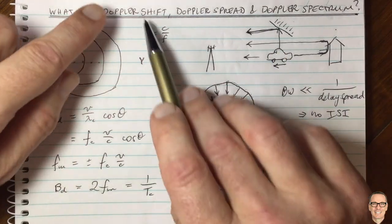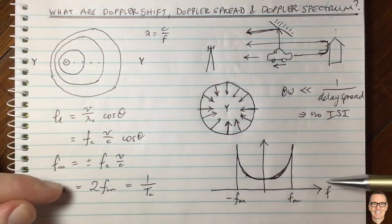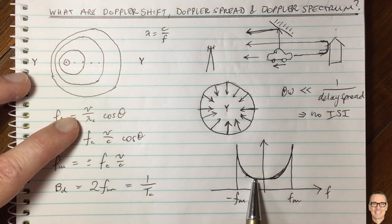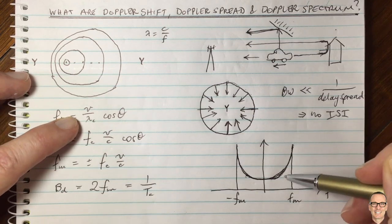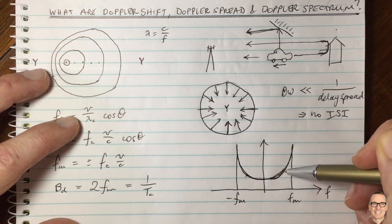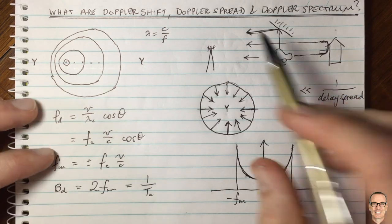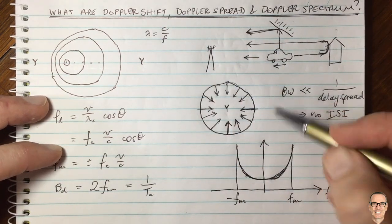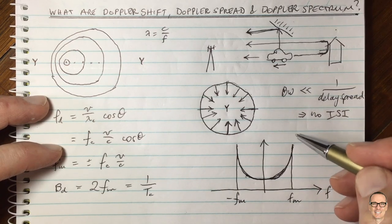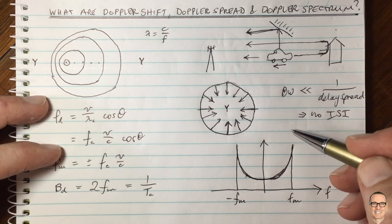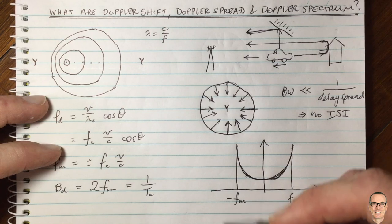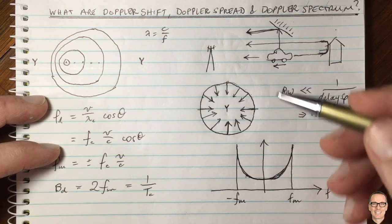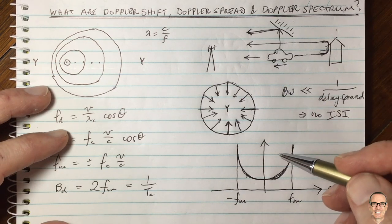So hopefully this has explained the Doppler shift, the spread, and the spectrum, and the relationship of all of those. If you want an exact formula for this spectrum, you'll find it in many textbooks and online. If this video has helped you understand these concepts, please give it a thumbs up — it helps others find the video. Subscribe to the channel for more videos, and check out the notes below, where there's a link to a complete categorized list of all the videos on the channel.